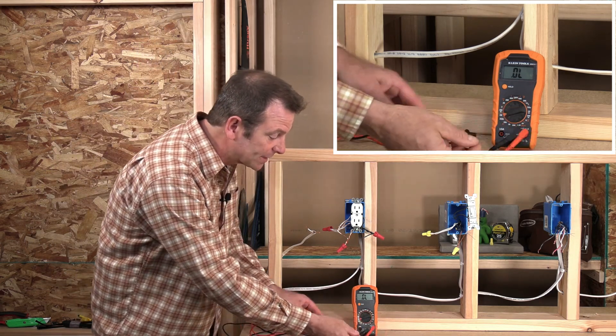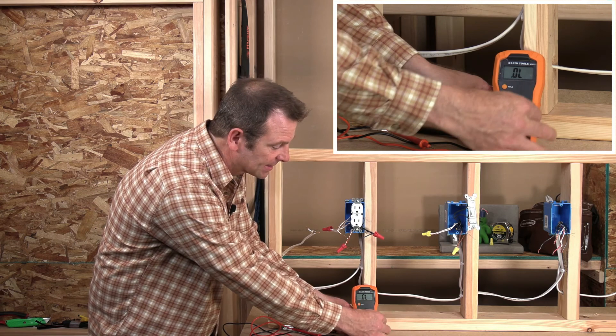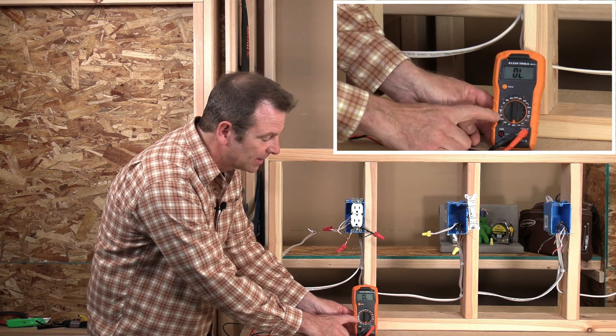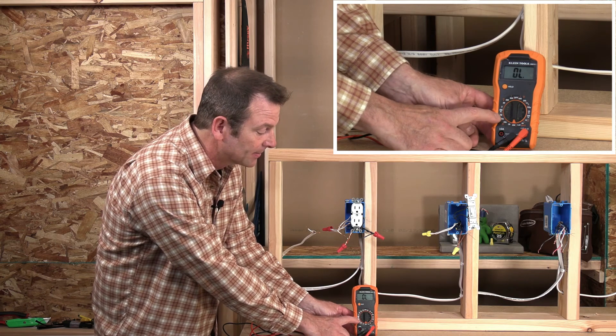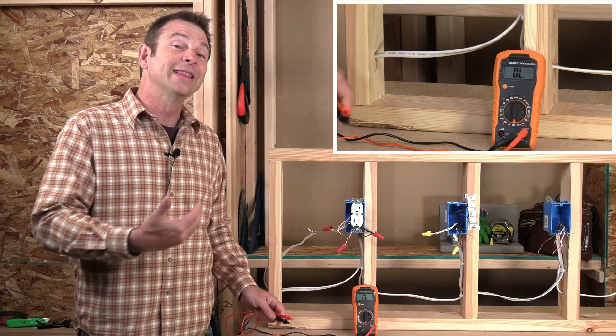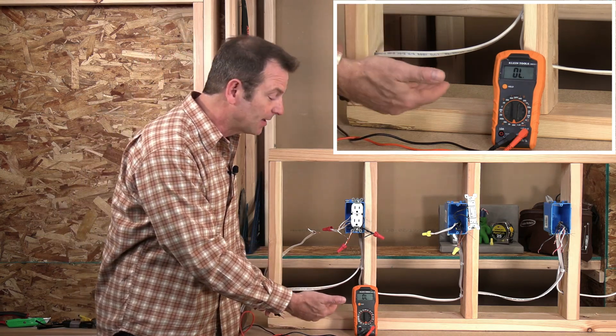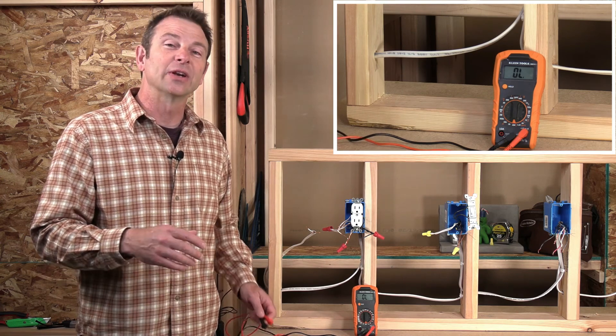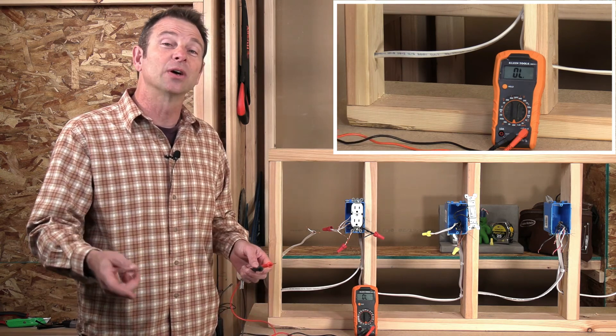I'm going to set this on the lowest setting for resistance just to get a reading. So my lowest reading is 200. My highest reading is going to be 2 megs. We don't need that high setting.